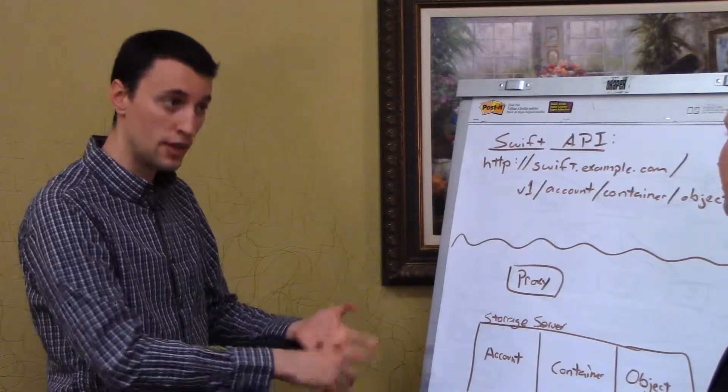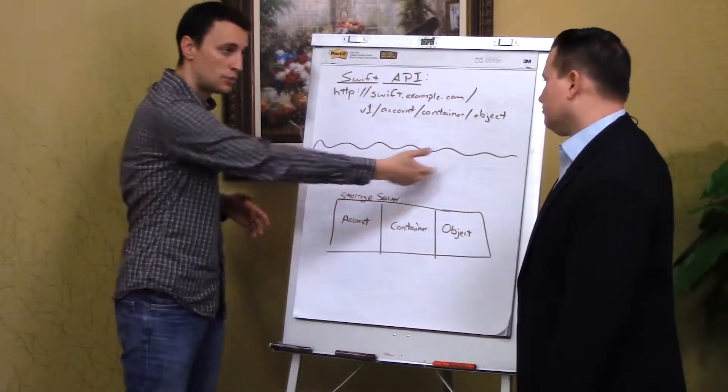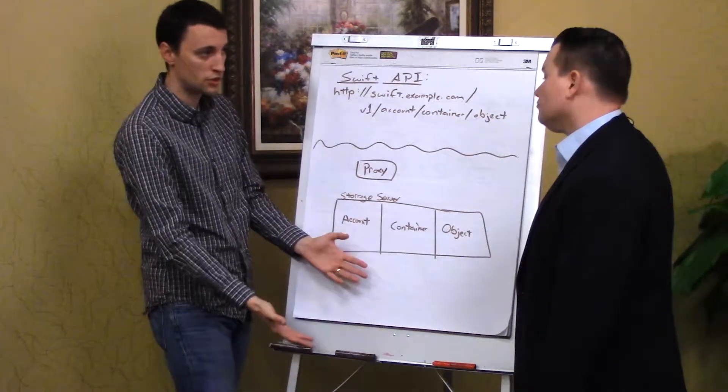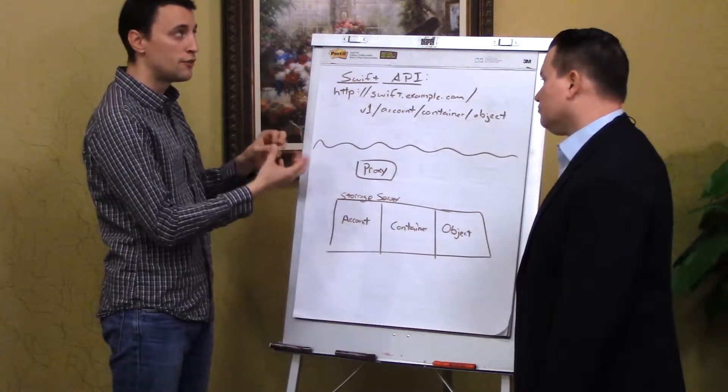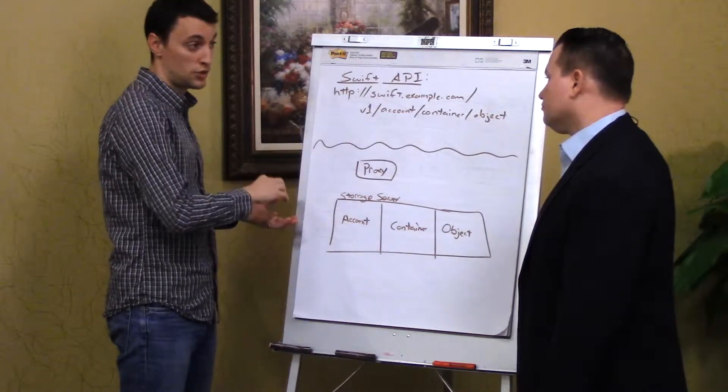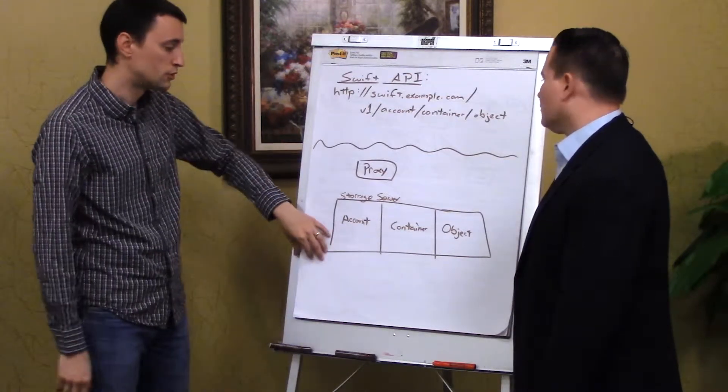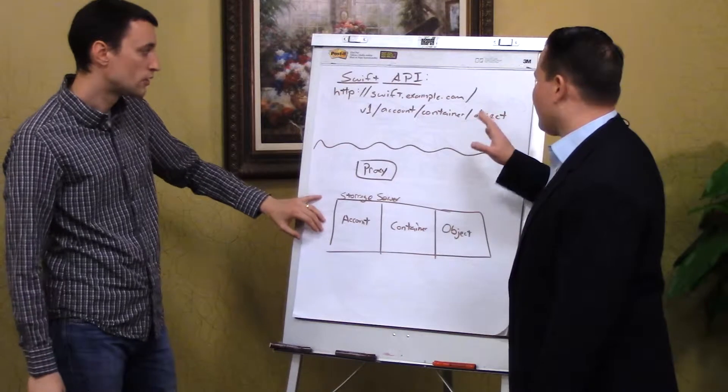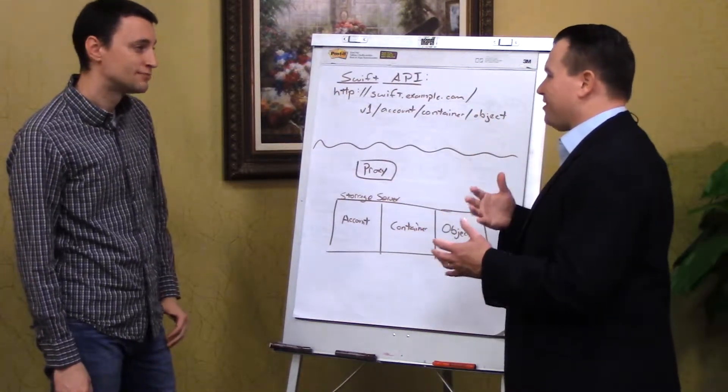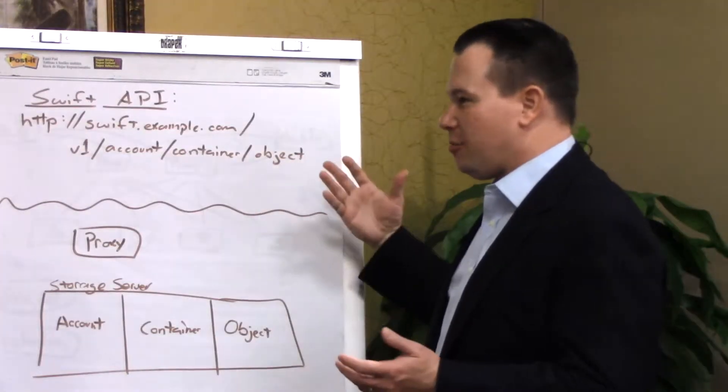It's a highly modular design. The Unix philosophy of do one thing and do it well means that if you need more client throughput, you can add more proxy servers. If you need more storage space, you can add more object servers. And you can do those independently, so you can very specifically tailor your Swift deployment to your specific use case, and you don't have to have this monolithic thing that looks the same for everybody no matter what they're using it for.